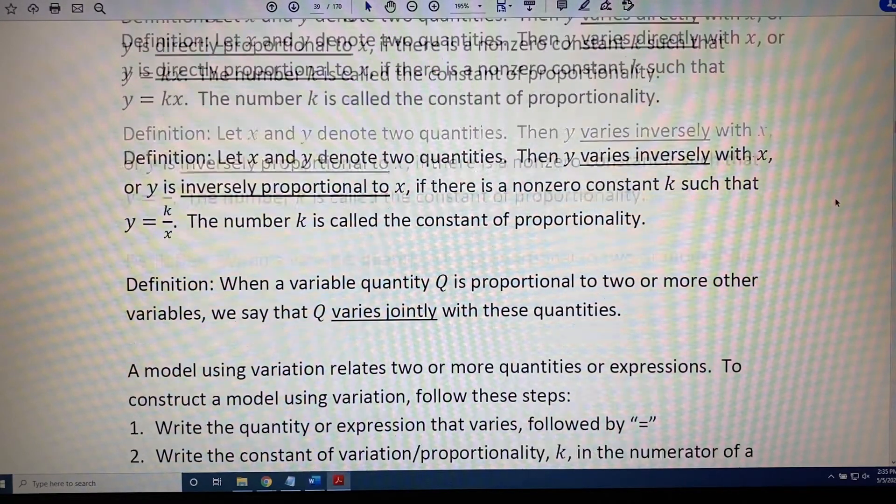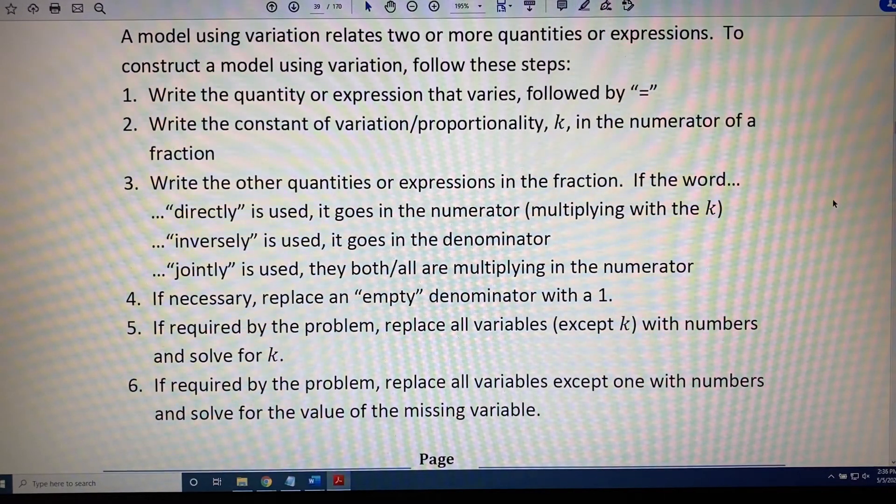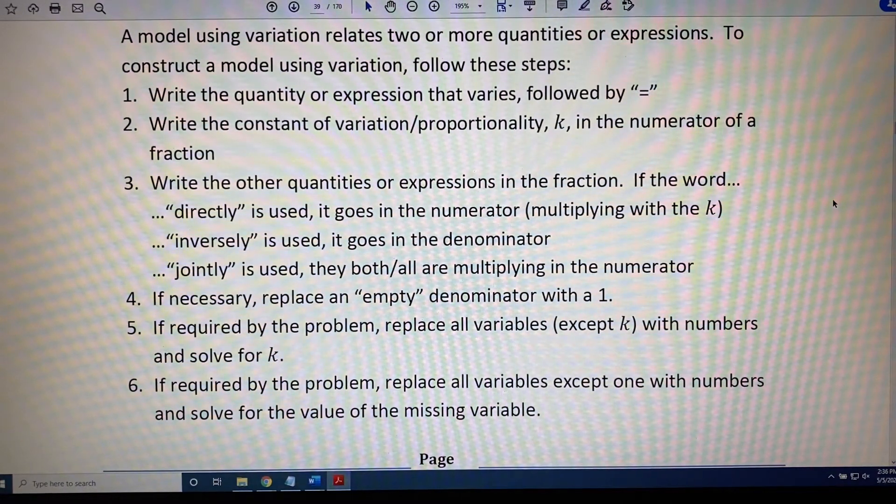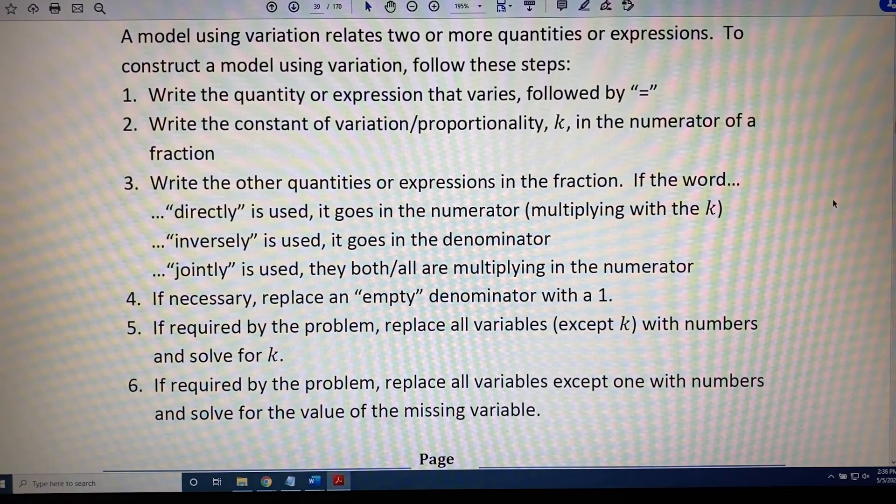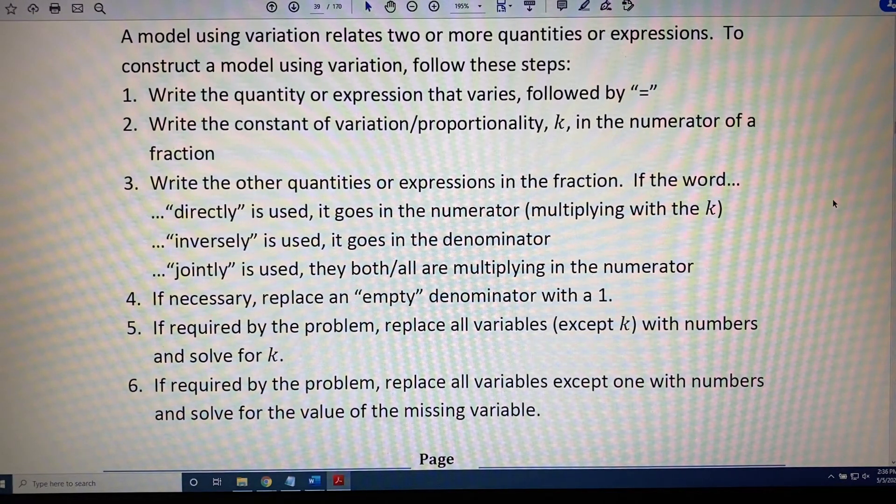All right, so now we're going to look at a six-step process for creating a variation model. A model using variation relates two or more quantities or expressions. To construct a model using variation, follow these steps. Step one, write the quantity or expression that varies, followed by an equals sign.